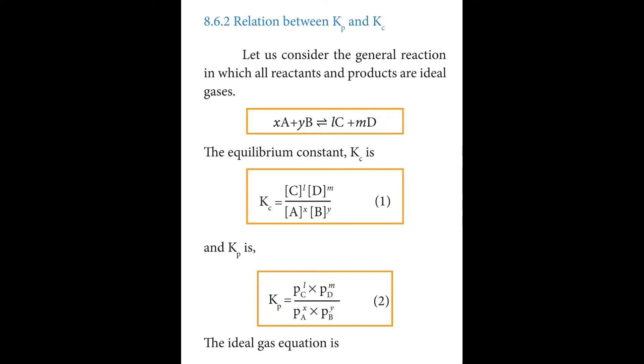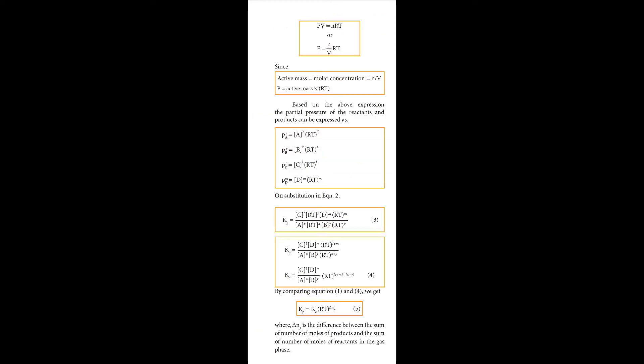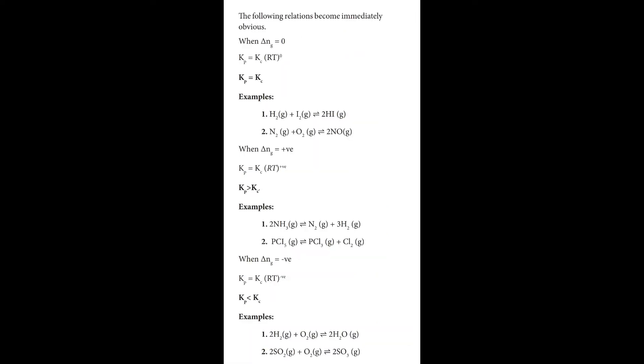Next one is about relationship between Kp and Kc. So derivation-based lesson is to practice the relationship between Kp and Kc. What is the final answer? Kp equals Kc into RT power delta N of gas. Delta N of gas is the difference between sum of the number of moles of product and the sum of number of moles of the reactant in the gaseous equilibrium.